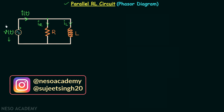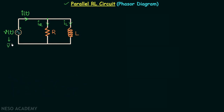Let us say that the phasor of voltage VT is V phasor, the phasor of current IIT is I phasor, the phasor of current IR is IR phasor, and the phasor of current IL is IL phasor. When you apply KCL at this node you will have I phasor equal to IR phasor plus IL phasor.